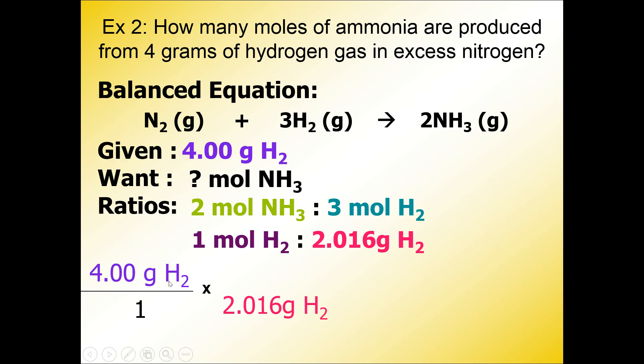We want the units to cancel out diagonally, so that's why I'm putting the 2.016 grams on the bottom. I'm going to put the 1 mole of H2 in the top now because this completes the ratio, and I can check this ratio off because I don't want to accidentally use it again.